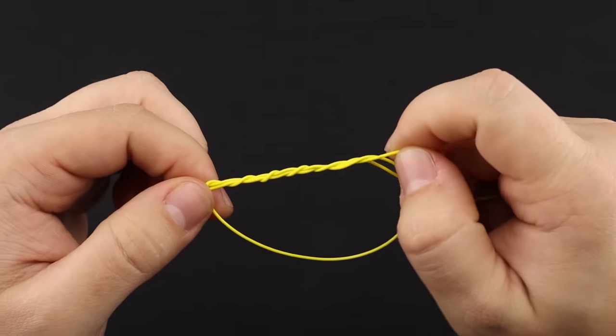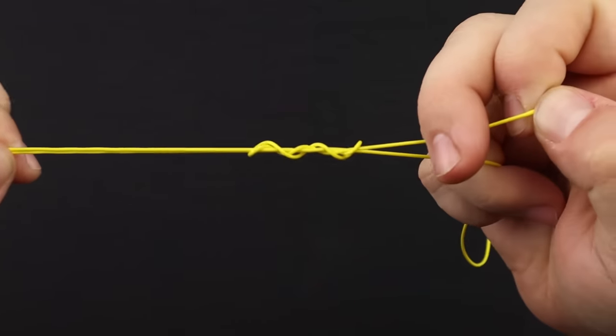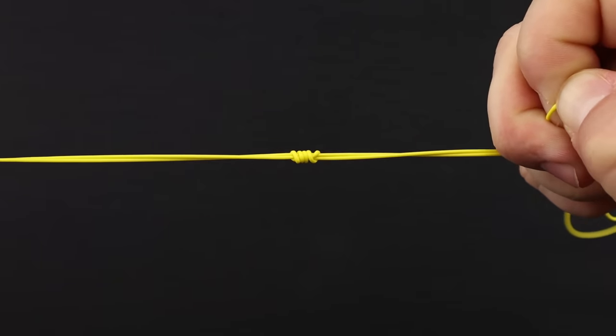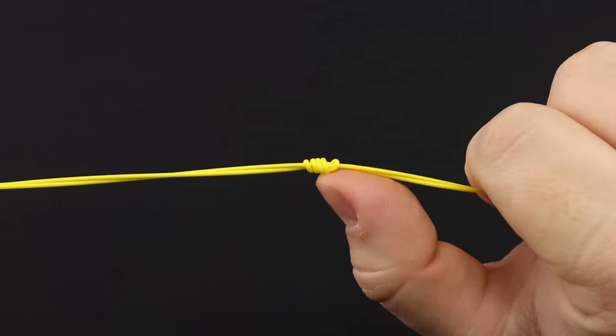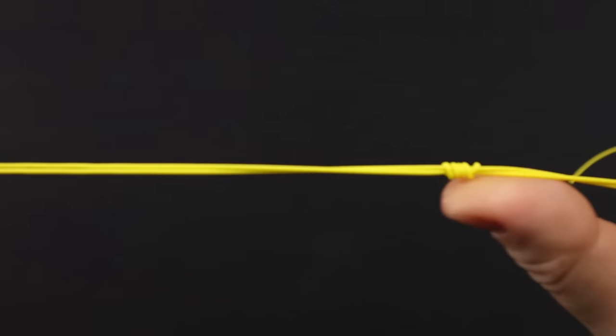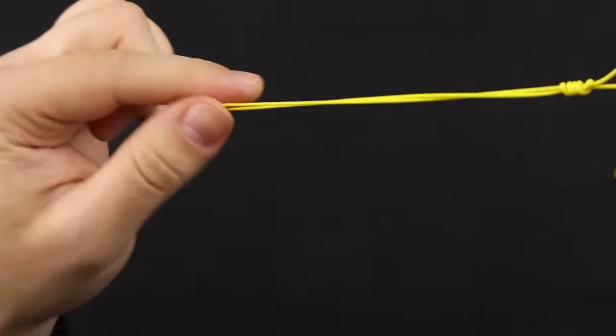You can go ahead and just pull on your tag end and the knot will start forming up on your main line. Make sure not to snug this as hard as you can quite yet. Just get it to a point where it's forming your knot just like so. I like to lubricate this knot section all the way over to the hook section here.